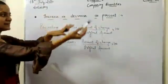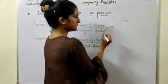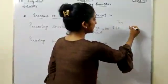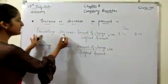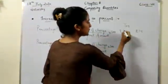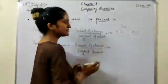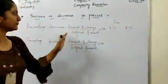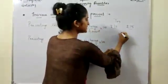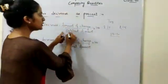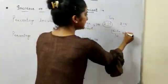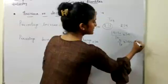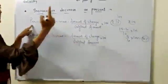For example, there is a toy. Initially its price was 10 rupees and later its price became 15 rupees. We are finding the percentage increase. Amount of change is 15 minus 10 = 5, upon original amount which is 10, into 100. So it is 5 by 10 into 100, which equals 50%. It means the price increased by 50%.